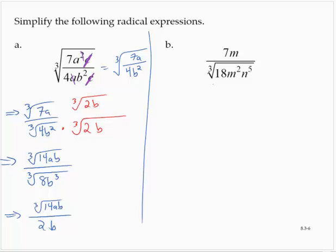But if I think of 18 as 2 times 9, well then that's 2 times 3 squared times m squared times n to the fifth. That makes it a little bit easier to decide what to multiply by.